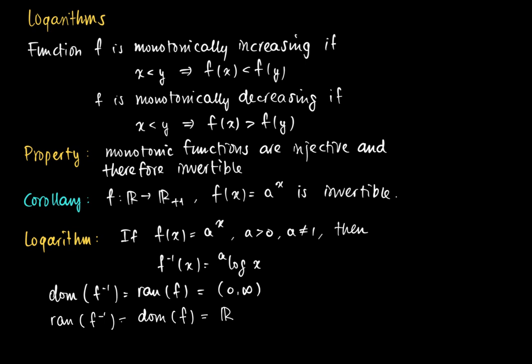Now look at the graph. In blue, I see the function a^x. And I know that the inverse is the yellow line. So if (0, 1) is on the graph of the exponential function a^x, then I know that (1, 0) must be on the graph of the function a log of x, since it's only the reflection of the graph of a^x in the line x equals y.